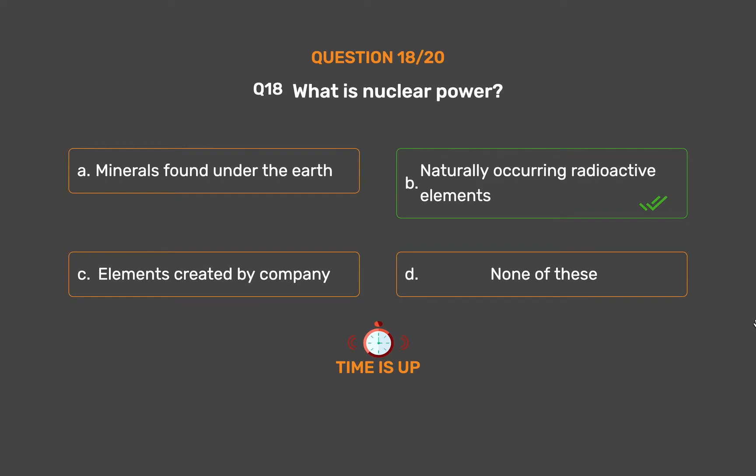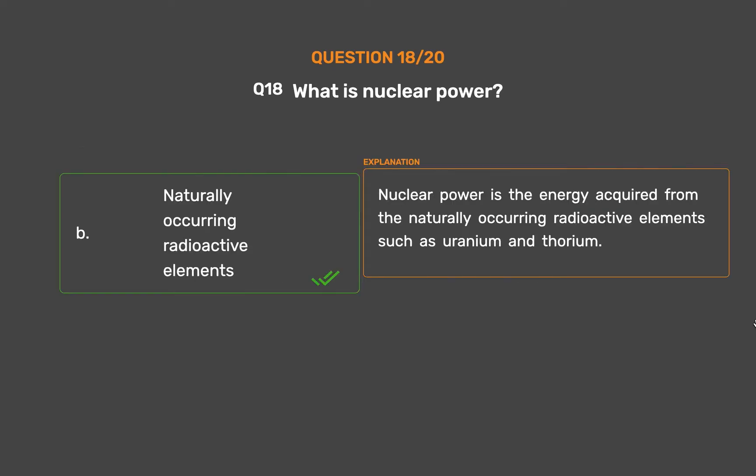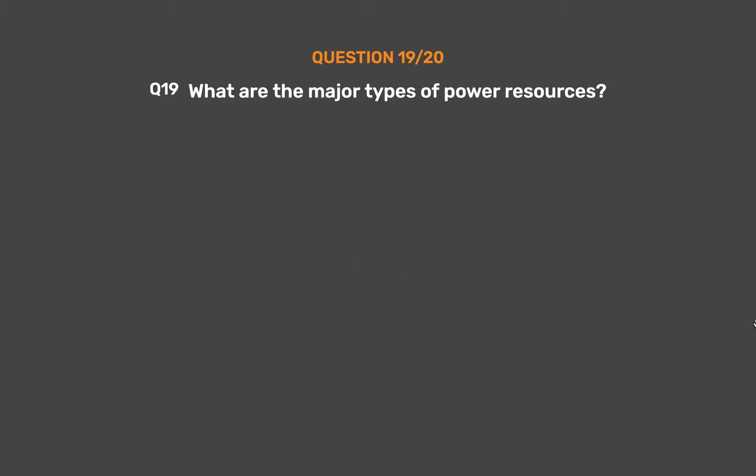The correct answer is Option B: Naturally occurring radioactive elements. Nuclear power is the energy acquired from naturally occurring radioactive elements such as uranium and thorium.